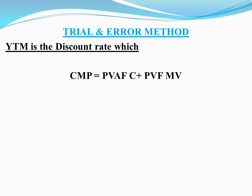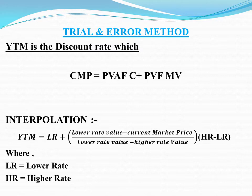We assume discount rates — we assume lower values and higher values. The rates are then interpolated. We calculate using the interpolation formula: lower rate value minus current market price, divided by lower rate value minus high rate value, multiplied by high rate minus lower rate. This is a simple method. If the formula method involves complicated steps, this trial and error method allows you to calculate YTM in a simpler way.